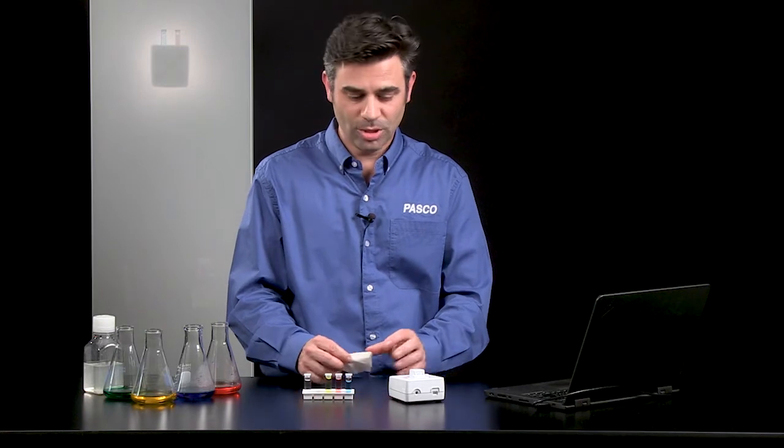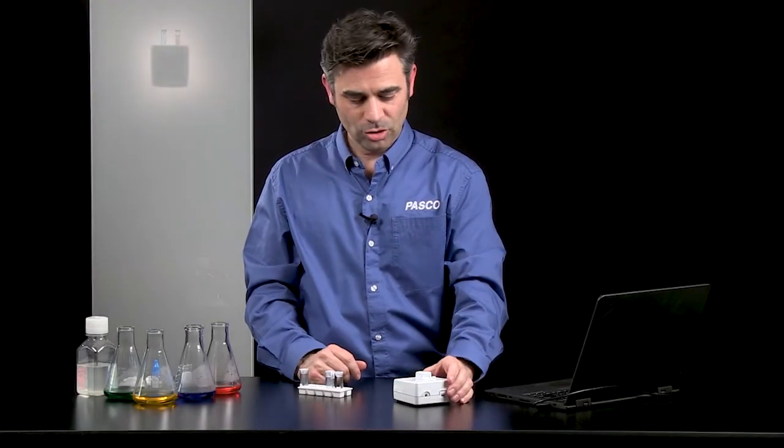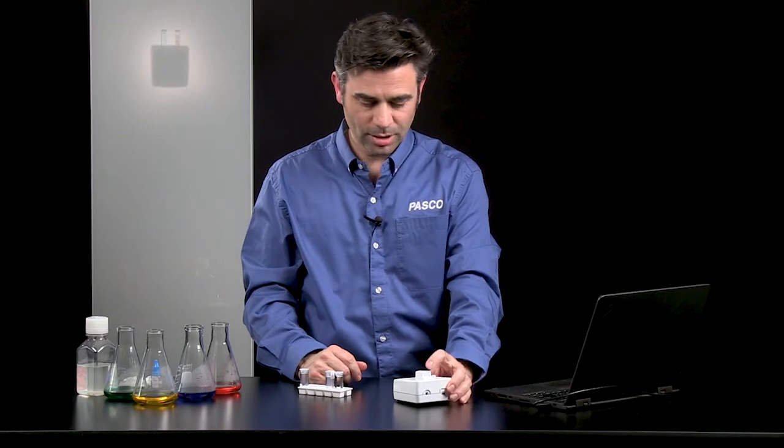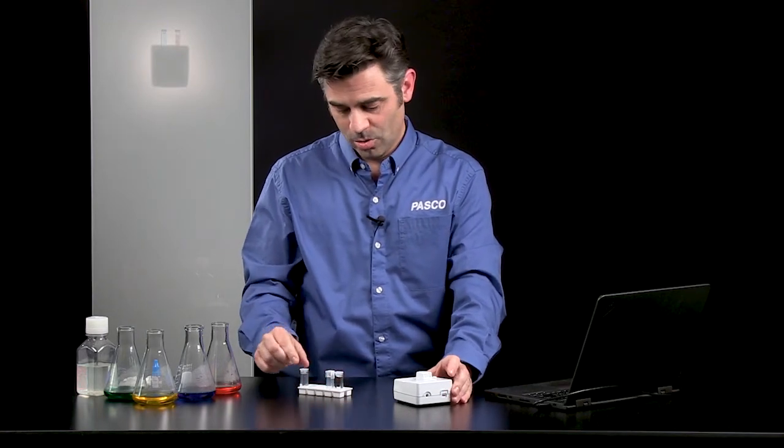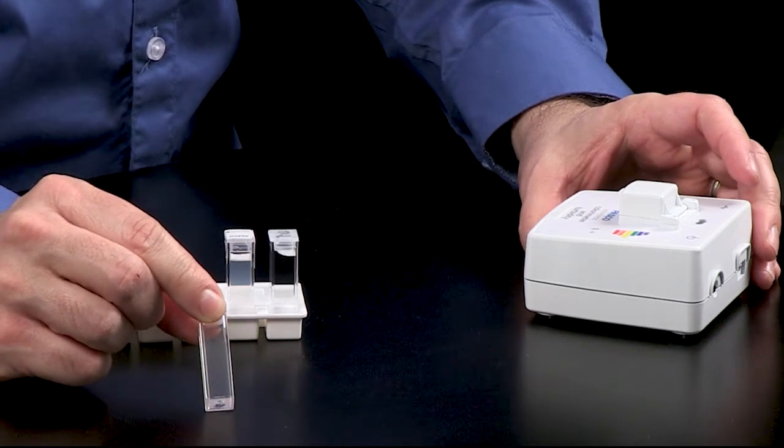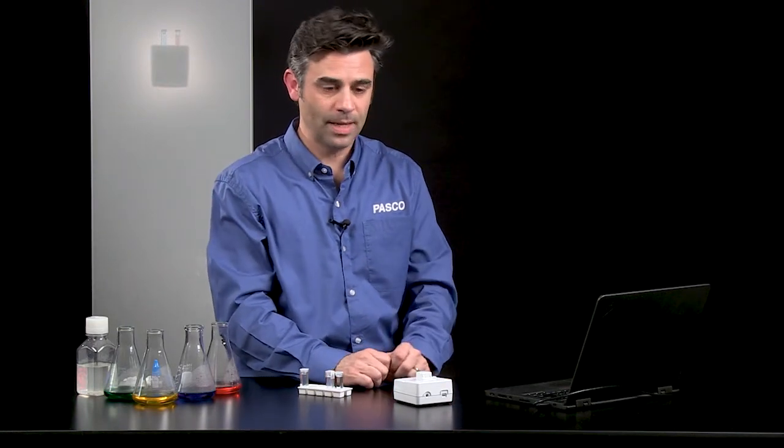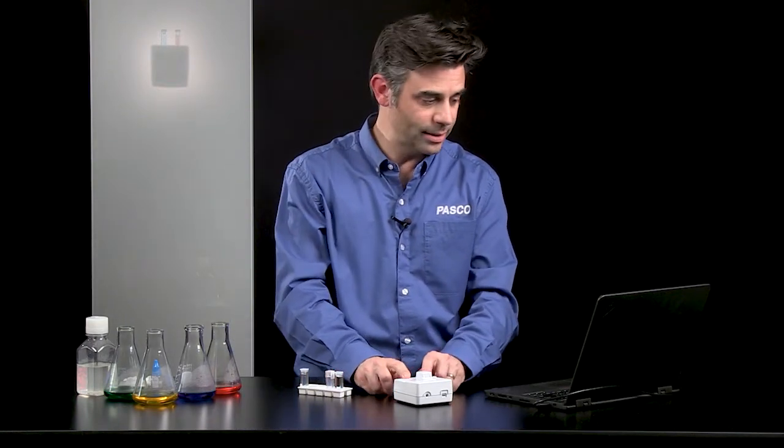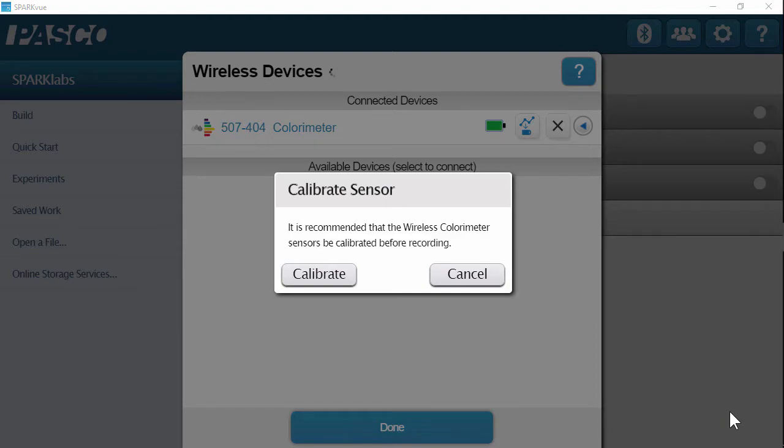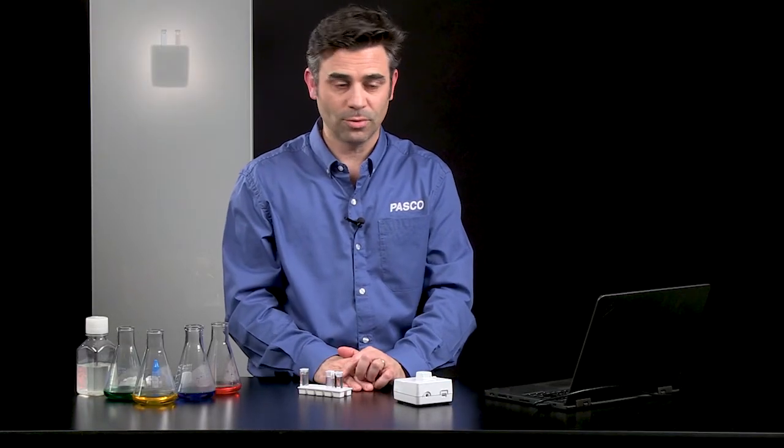All right. So we're going to reset and focus on the turbidity measurement of the wireless colorimeter and turbidity sensor. We're going to try to determine the turbidity of this unknown sample. So to do that, we are going to reconnect our sensor to SparkView. Since we have reset and reconnected, it is going to prompt us to calibrate again. And that's good because calibration for turbidity is just as important as it is for colorimetry.